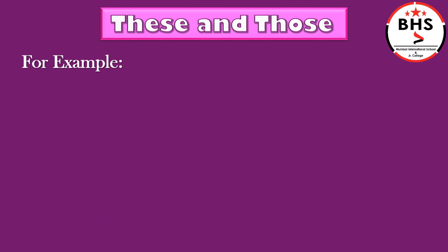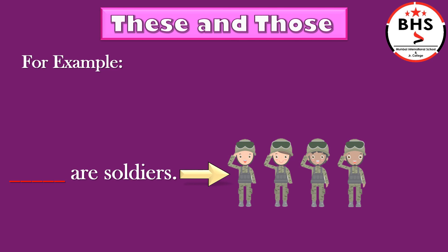Let us see some examples. Dash are soldiers. Children, here, there are more than one soldier and the short arrow shows they are near. Hence, we will use these. These are soldiers.